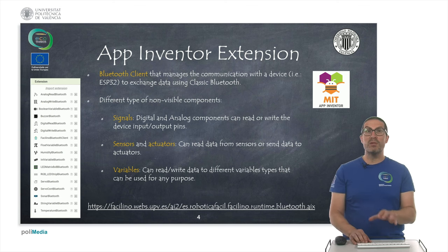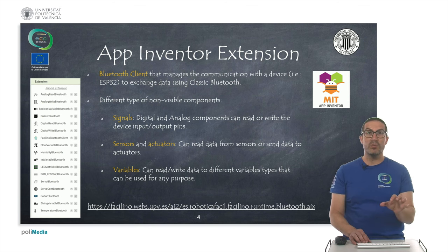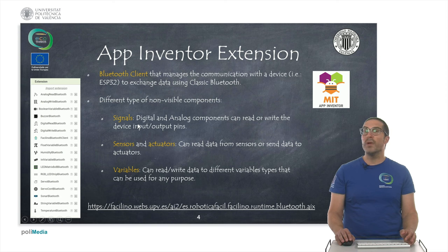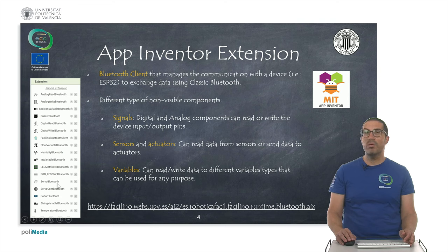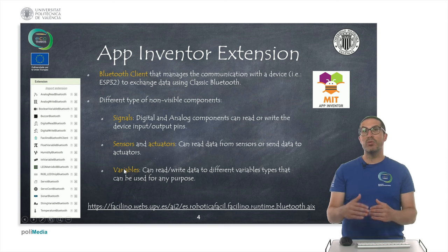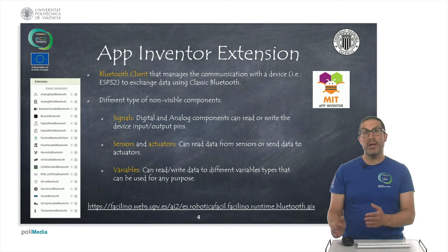Together with this Bluetooth client, we have developed different kinds of non-visible components grouped into signal components, sensor and actuator components, and variable components. Signal components are used to read or write digital or analog signals — analog read, analog write, digital read, digital write. Sensor and actuator components can read data from sensors or send data to actuators, such as a buzzer, a humidity sensor, or a servo component to which you can send an angle. Variable components are used to store different kinds of variables; they are indexed and can be used for any purpose in the Arduino code.